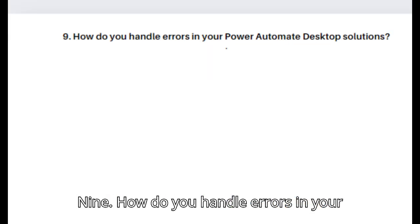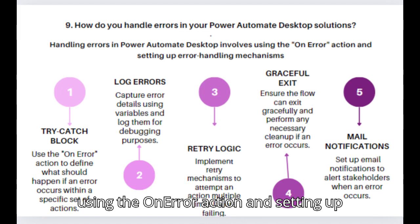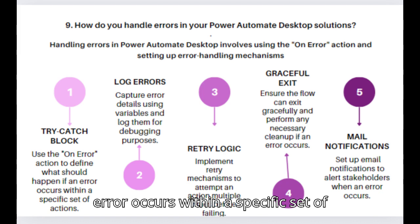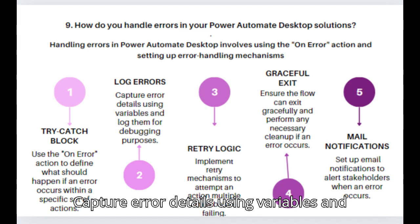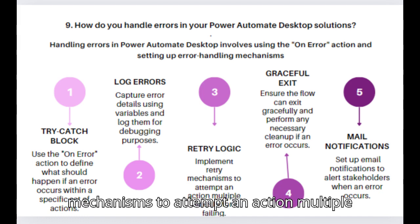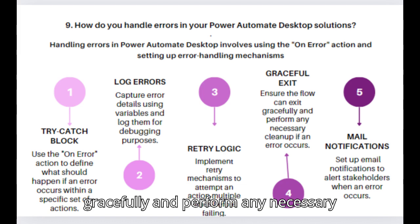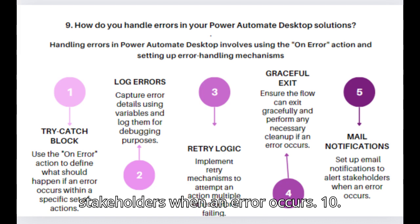Question 9: How do you handle errors in your Power Automate Desktop solutions? Handling errors involves using the on error action and setting up error handling mechanisms: 1. Try-catch block: use the on error action to define what should happen if an error occurs. 2. Log errors: capture error details using variables and log them for debugging. 3. Retry logic: implement retry mechanisms to attempt an action multiple times before failing. 4. Graceful exit: ensure the flow can exit gracefully and perform necessary cleanup. 5. Email notifications: set up email notifications to alert stakeholders when an error occurs.